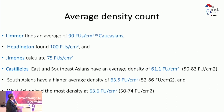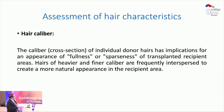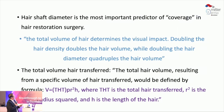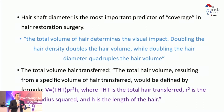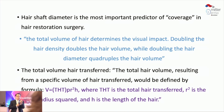You also need to assess hair caliber, which is very important. The total volume of hair determines the visual impact. Doubling hair density doubles hair volume, but doubling the hair diameter quadruples the hair volume. So when you harvest a good-caliber graft, the overall transferred hair will look much better in terms of volume.